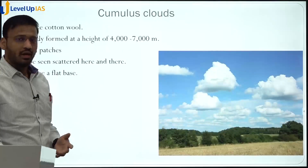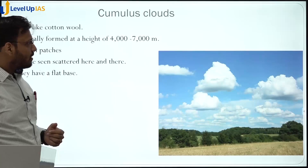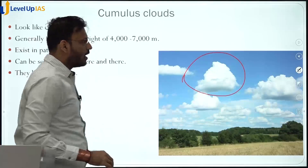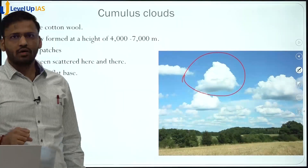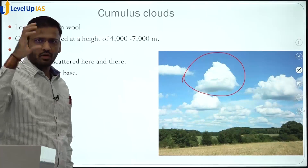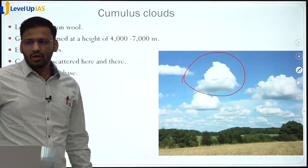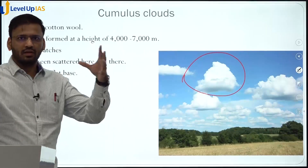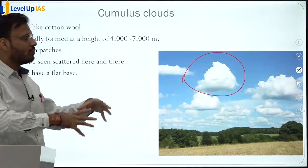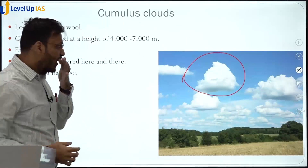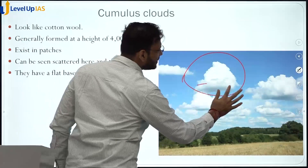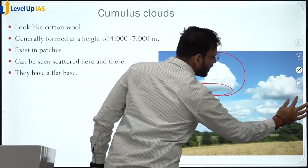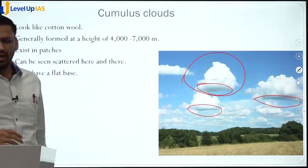The next type of cloud is the cumulus cloud. They appear like a cotton ball — individually floating from one place to another. Their bases are flat, as you can see. Cumulus clouds have flat bases and are always scattered.